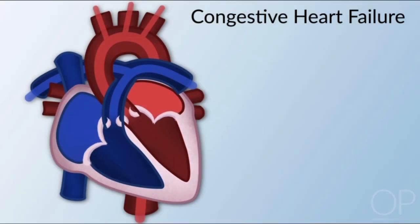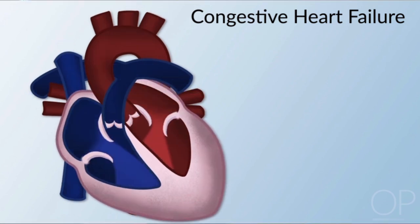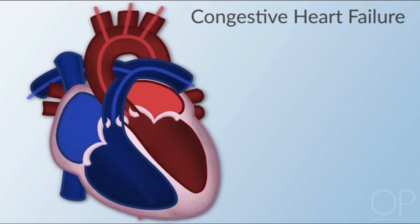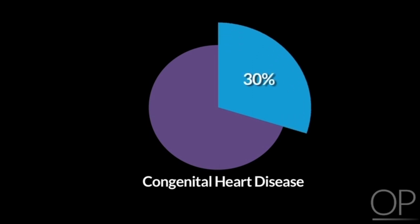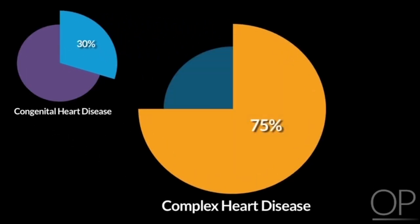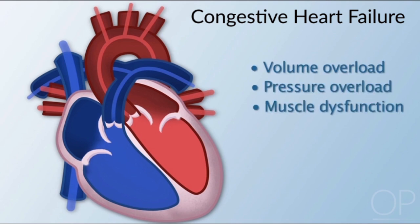Congestive heart failure occurs when the heart cannot deliver enough blood to meet the demands of the body. The heart attempts to compensate by increasing the heart rate, thickening the walls of the heart to contract more effectively, or dilating the heart to increase blood volume and improve cardiac output. Congestive heart failure occurs in 30 percent of infants and children with congenital heart disease, and in over 75 percent of children with complex heart disease. Causes include volume overload, pressure overload, and heart muscle dysfunction.